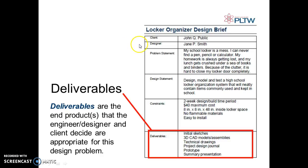Just to recap, you will be responsible for making a design brief. You will need your client as well as yourself listed. You need to find out the problem — basically, what are you trying to find a solution for? The design statement is what you need to do to solve the problem. The constraints are your limitations, and you can also list criteria here. Your deliverables are the final pieces involved in order to call the project done. If you have questions, please ask Mr. Rutz.